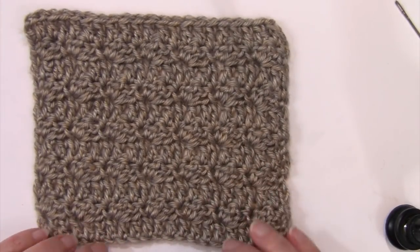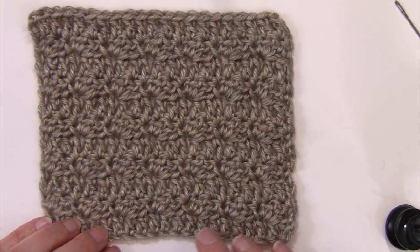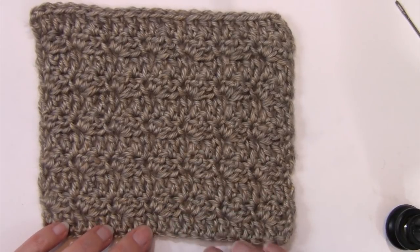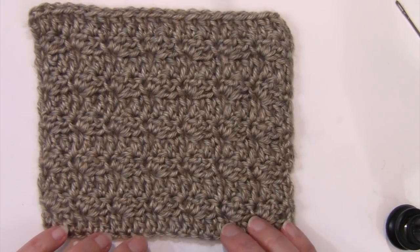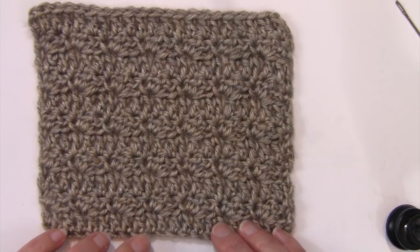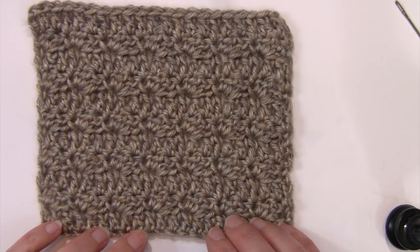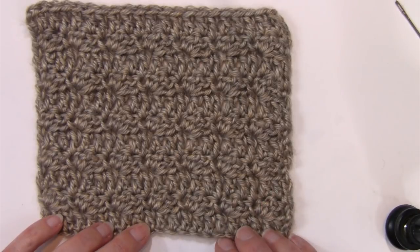So you can see here that I've completed my sample piece. I completed eleven rows, and with that completion you can really tell how textured this stitch becomes and how much fun a two row repeat can really give you an interesting stitch.